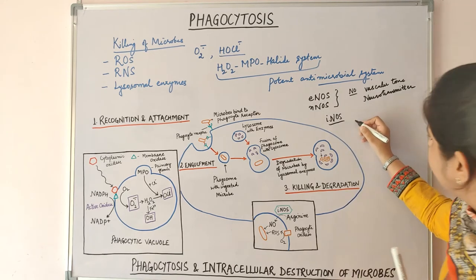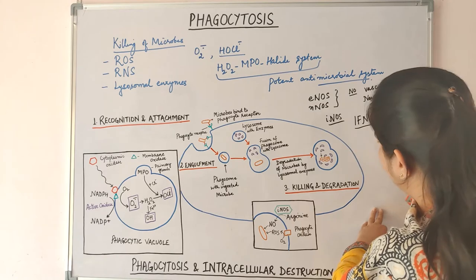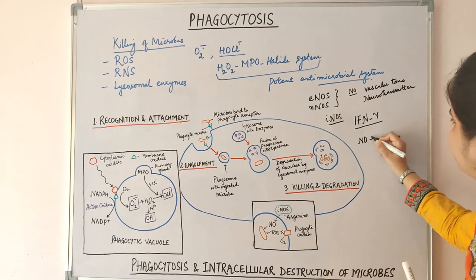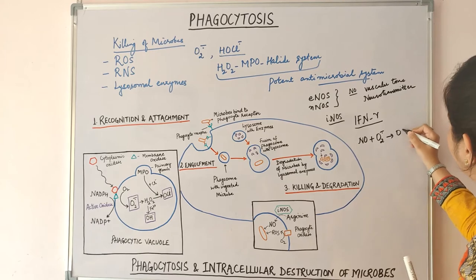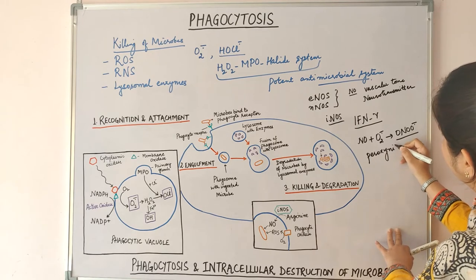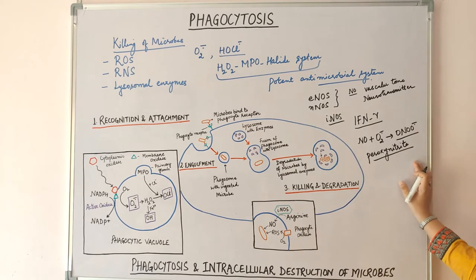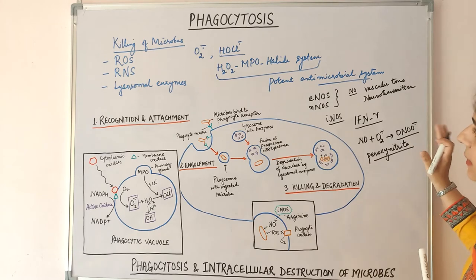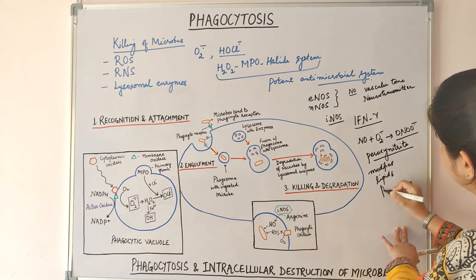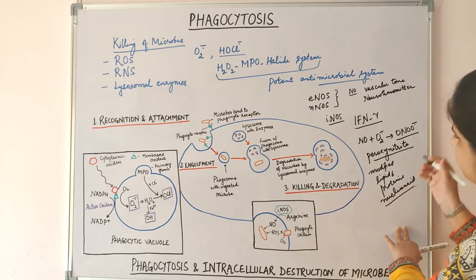When the macrophage is activated by cytokines like interferon gamma or bacterial products, this leads to nitric oxide production. This nitric oxide reacts with superoxide anion to form peroxynitrite anion, which is a potent bactericidal agent. Its mechanism of action is similar to reactive oxygen species — it modifies lipids, proteins, and nucleic acids of the microbe, leading to its destruction.